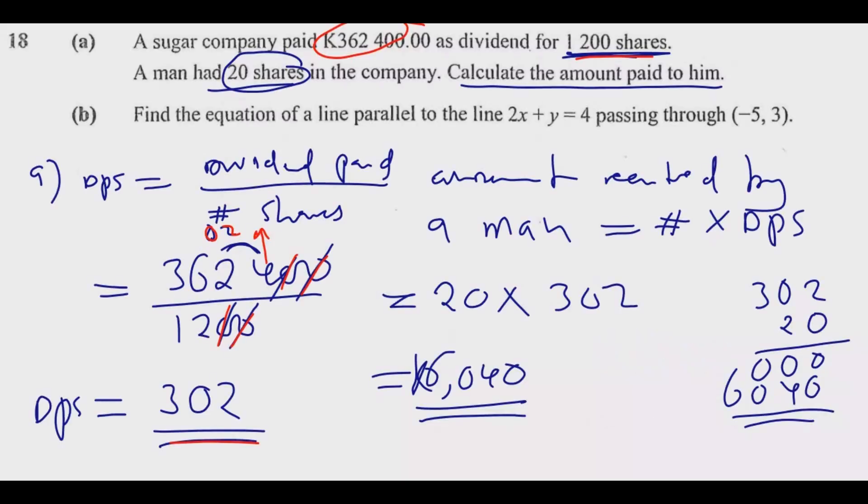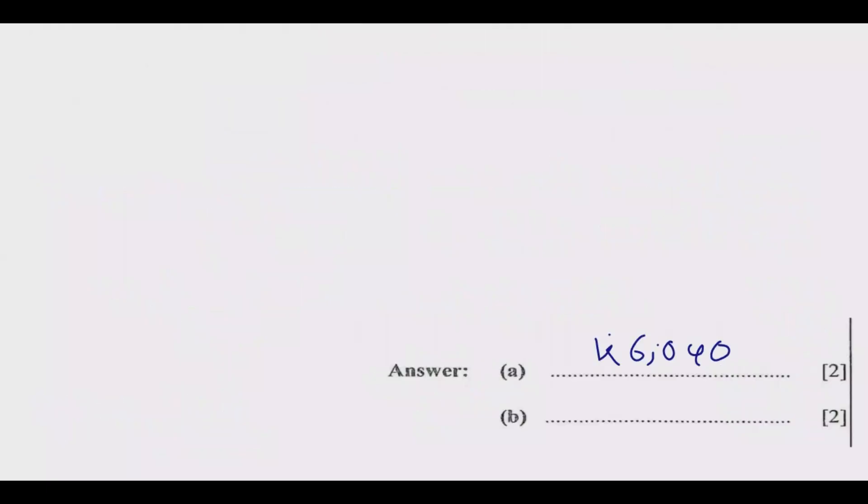Question (b): Find the equation of a line parallel to 2x + y = 4 passing through (-5, 3). The principle here is that if two lines are parallel, they have the same gradient - the slope is the same because they are parallel.